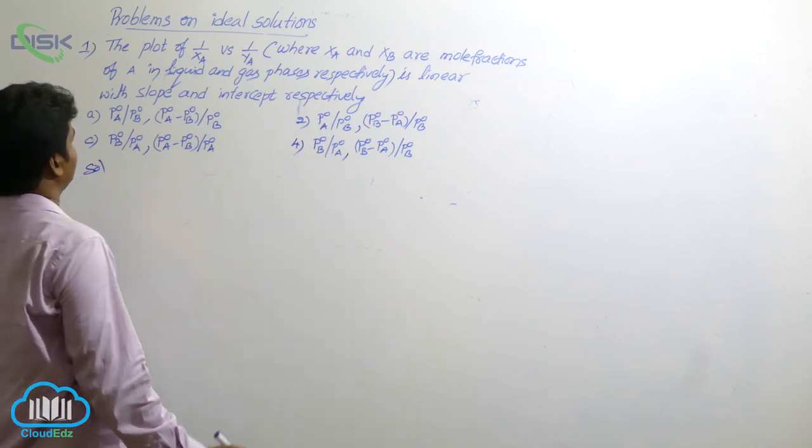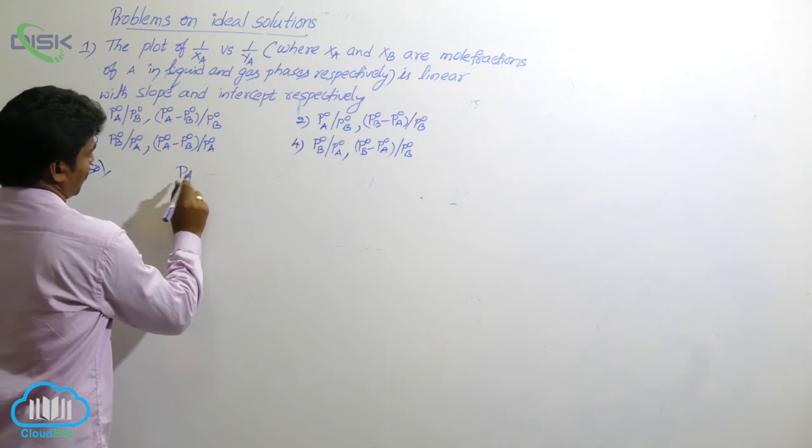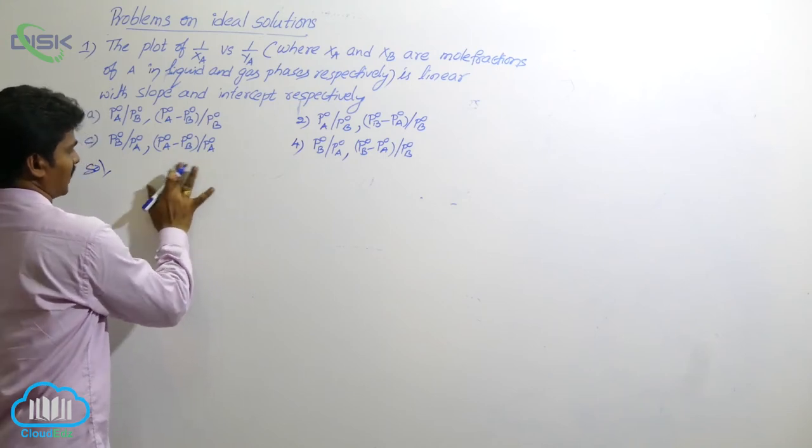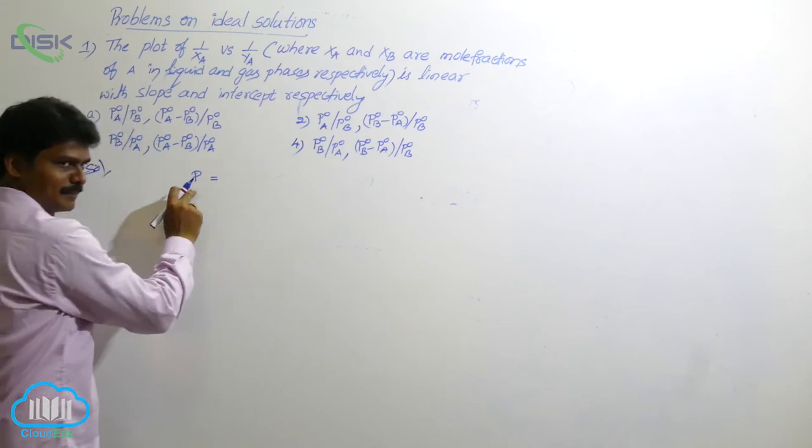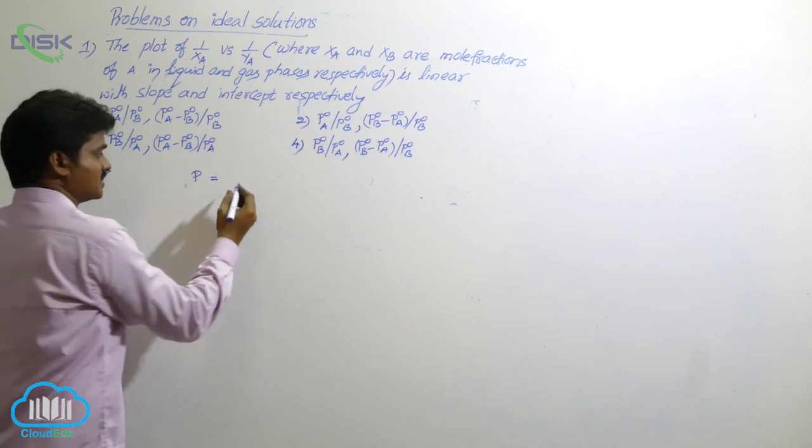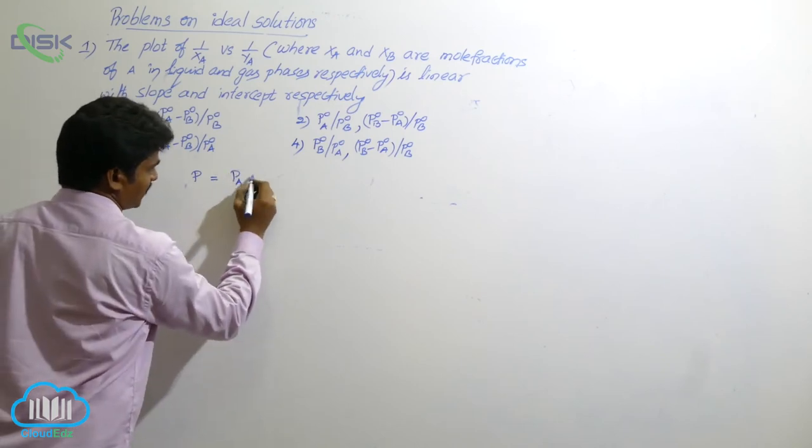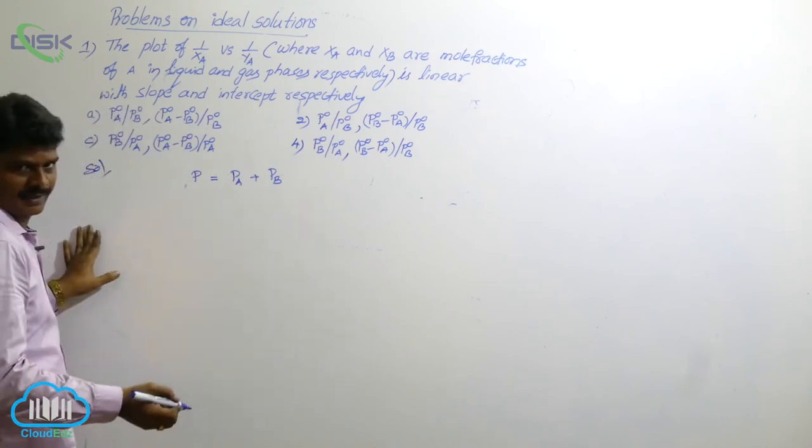So for that, let us use the formula. P total is equal to, from ideal solution, we have a formula. What is that? P total means total pressure for an ideal solution is equal to partial pressure PA, partial pressure PB.